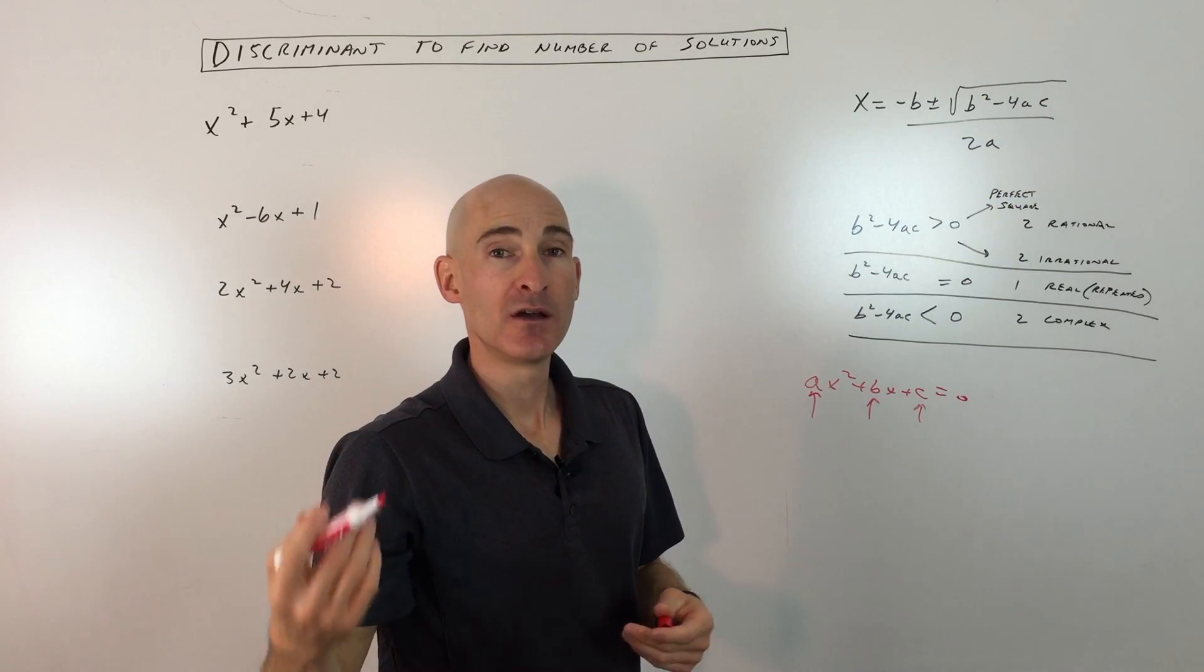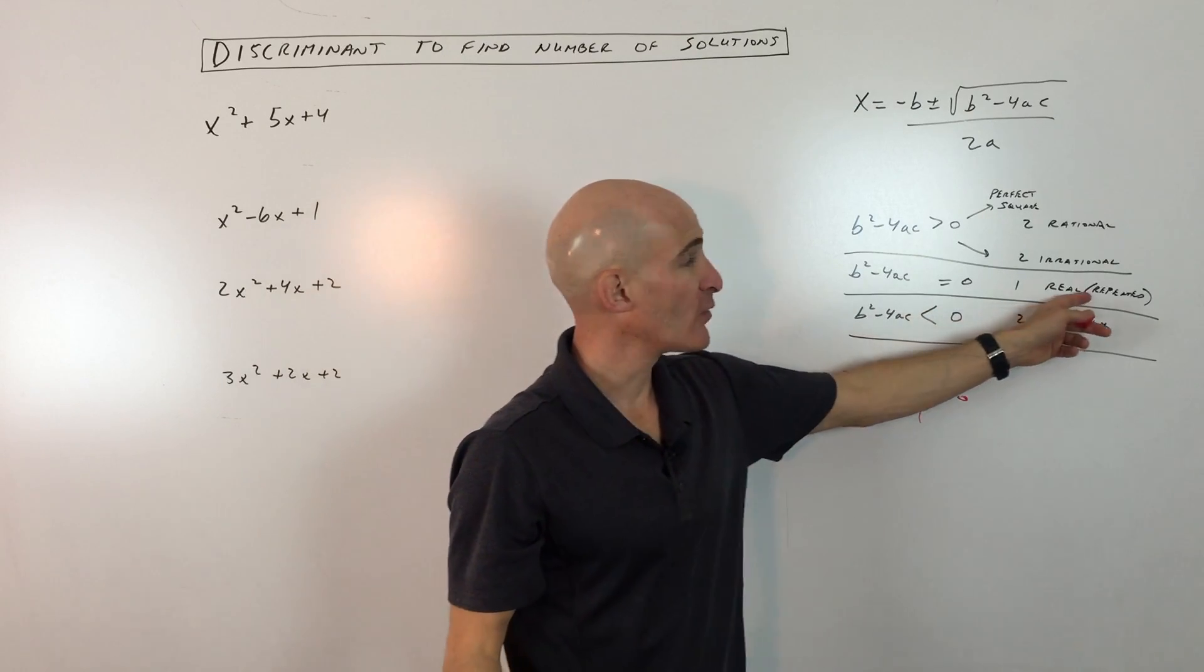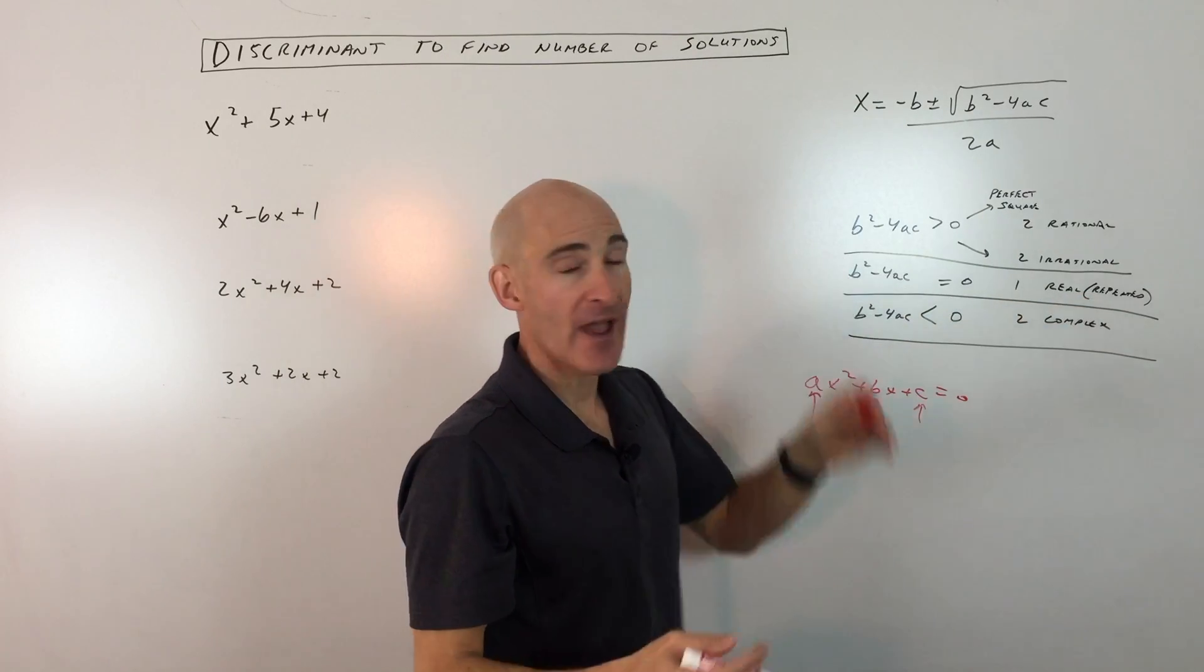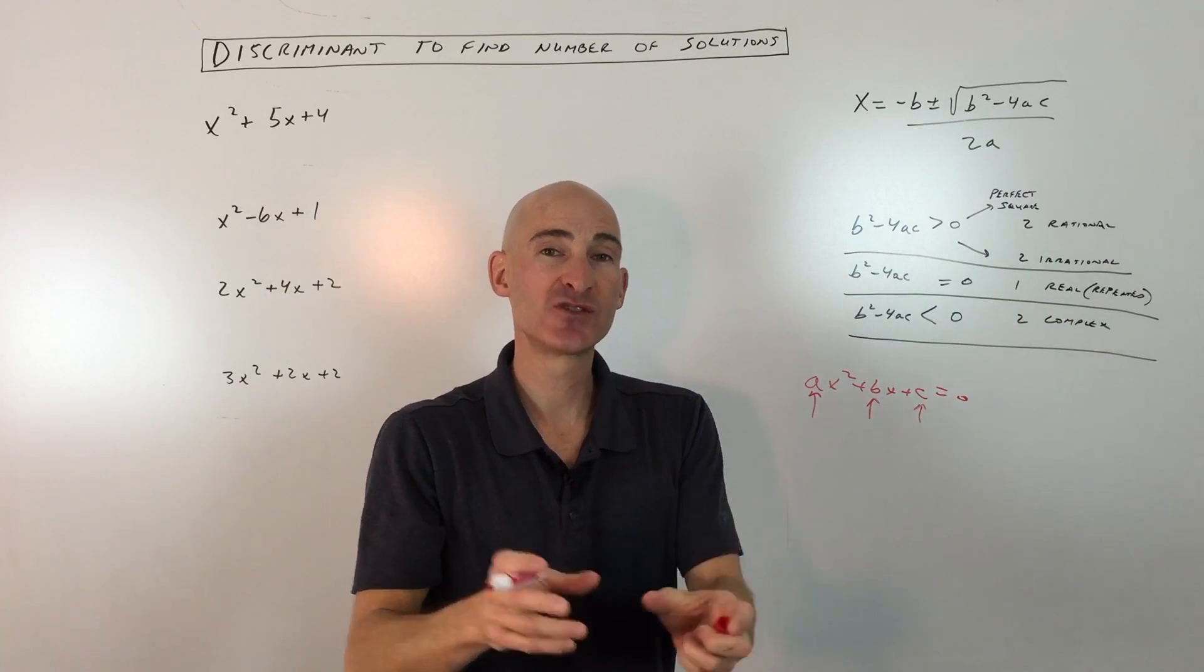Now, this is called a repeated root, and what that means is that if you were to factor the quadratic, you would get the same solution twice.